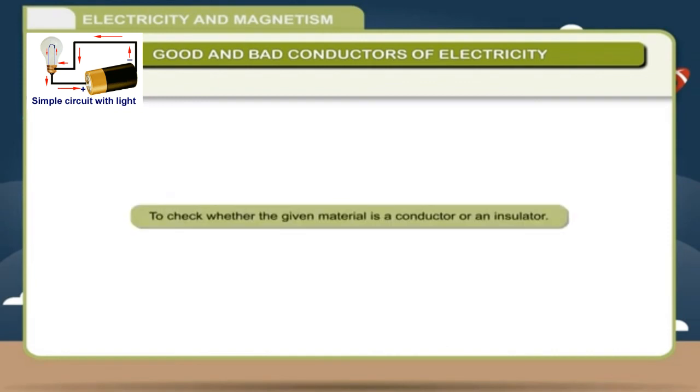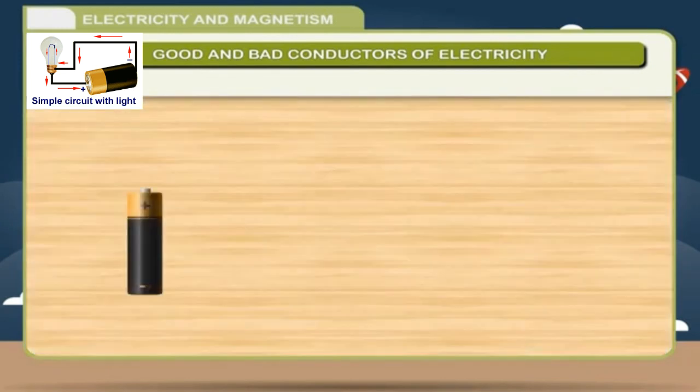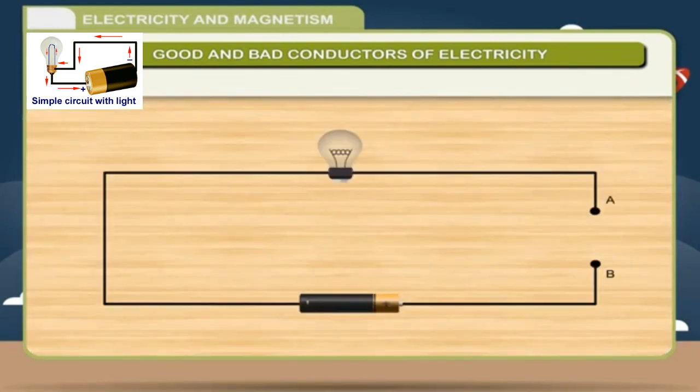To check whether the given material is a conductor or an insulator. For this, take a dry cell, a bulb and a copper wire. Given figure के according आपने connect कर लीजिए और A और B के बीच में space रहने दीजिए. With the gap, circuit is not complete and the bulb does not glow. Now, take a paper clip and fit in the gap AB. You will find that the bulb glows.